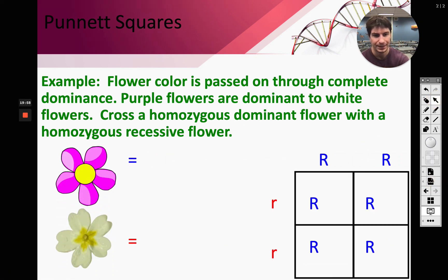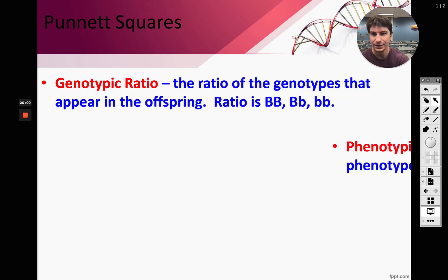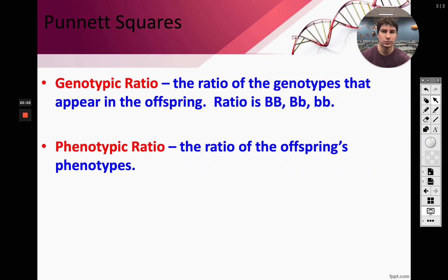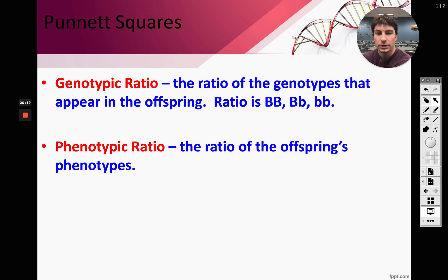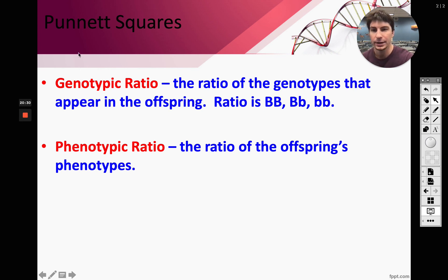When doing Punnett squares, we'll look at genotypic and phenotypic ratios. Genotypic ratios deal with the alleles themselves, and phenotypic ratios deal with what we actually see in the offspring. We'll tackle those examples tomorrow — have a good rest of your day.